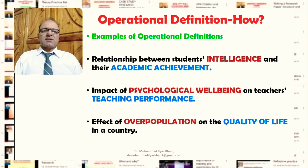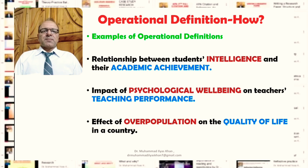In this case, like the previous one, we need to clearly define what we as researchers mean by psychological wellbeing, how we have actually measured it in our own study, and similarly how we have measured teaching performance — and then how we have operationalized and evaluated the impact of psychological wellbeing on teaching performance.